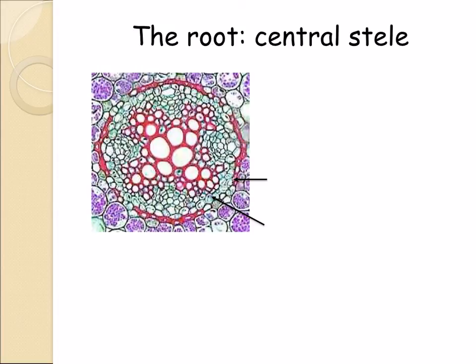Focusing on the central stele, look at this high-power photomicrograph. Can you identify the xylem and phloem? Remember that the xylem looks like an X in the root. There is also a layer of cambium cells between the xylem and phloem, which is quite difficult to identify. The stele is where the vascular tissue is, and it is surrounded by two important layers. The endodermis stains red because it contains a waxy substance called suberin, which forms the Casparian strip.